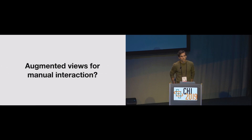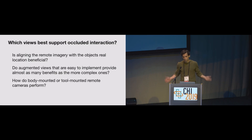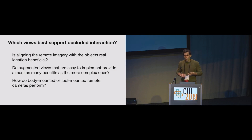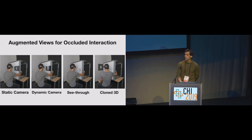What we were interested in was which augmented views would best support manual interaction with occluded objects. To figure this out, we had questions like: Is aligning the remote imagery with the object's physical location important? Do augmented views that are really difficult to implement perform so much better than the easy ones? Is a remote camera screen just as good as the see-through view? And how do body-mounted or tool-mounted remote cameras perform? To answer these questions, we evaluated four augmented views — but first, let me tell you about our setup.